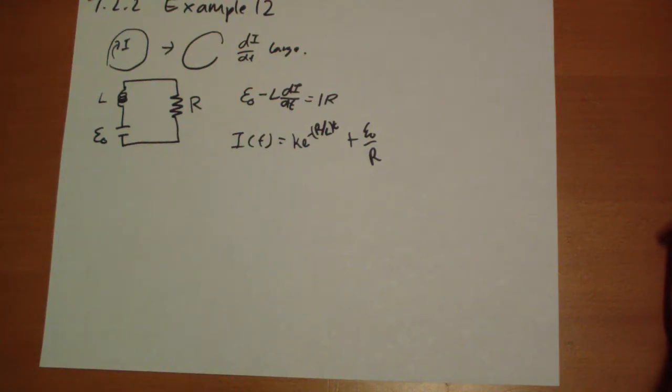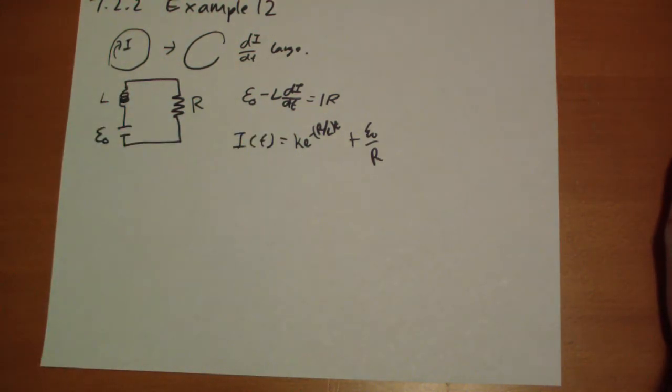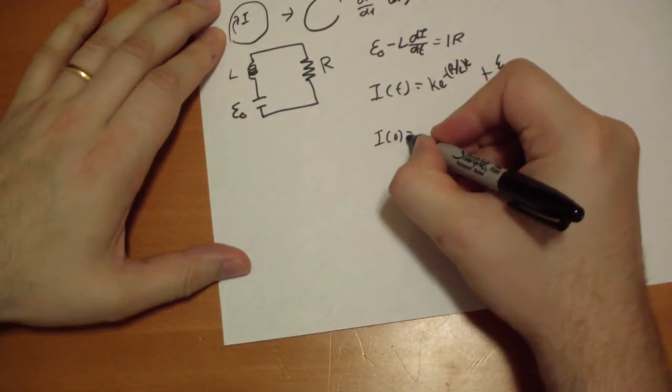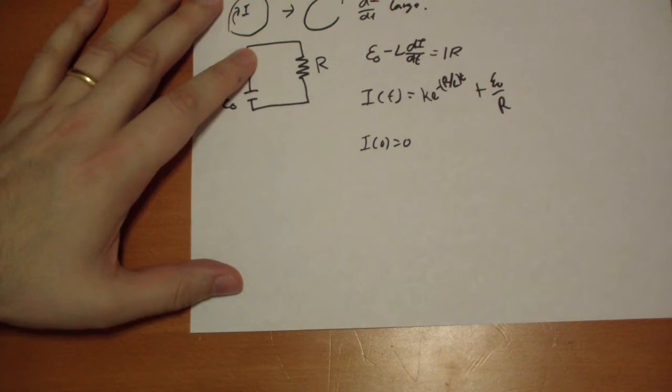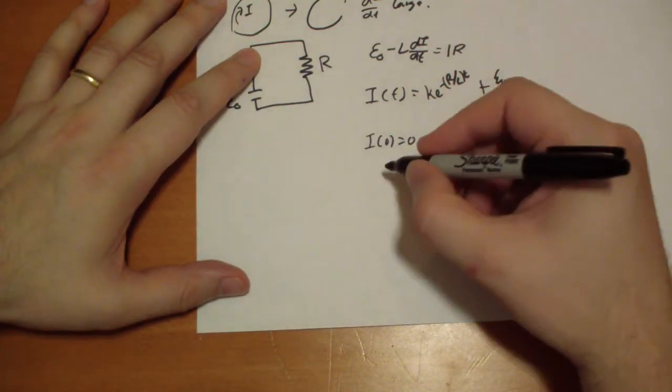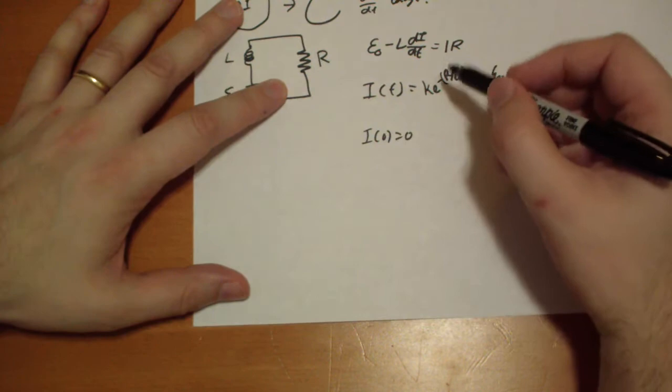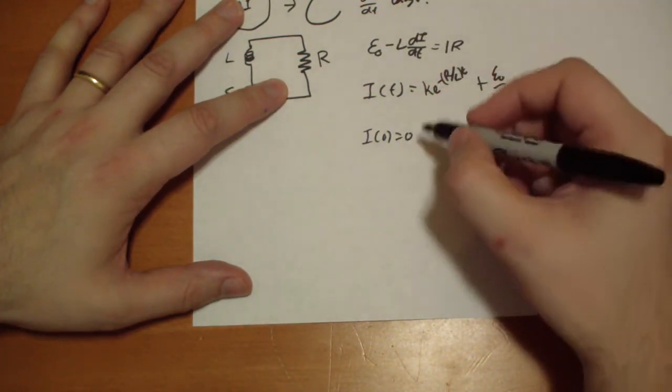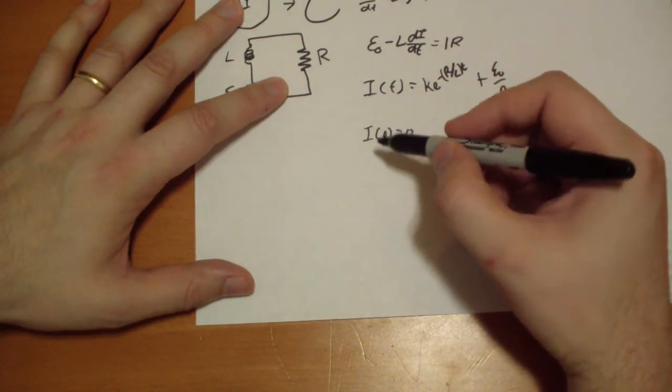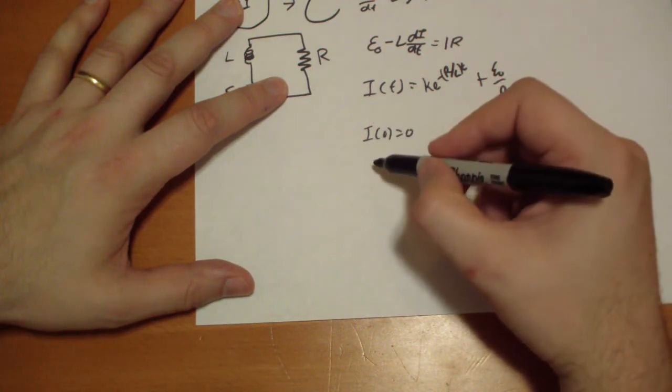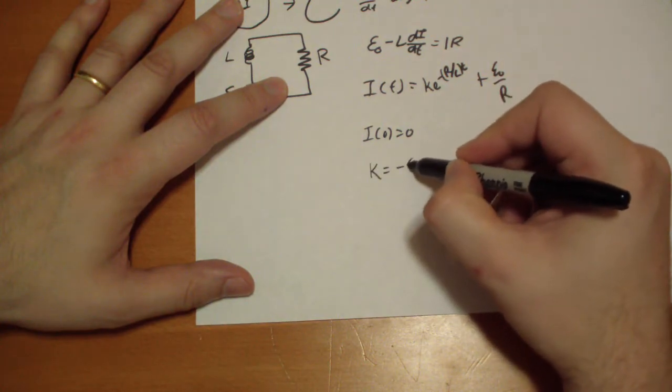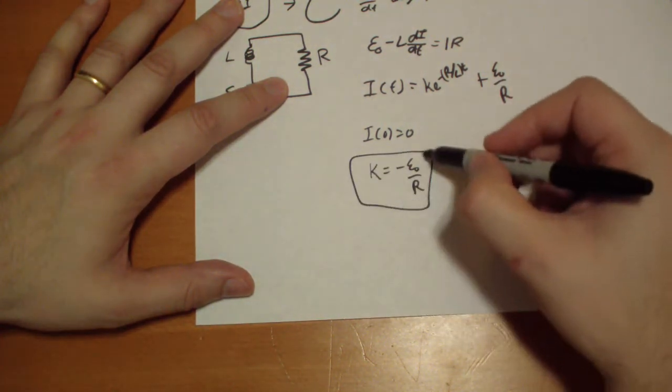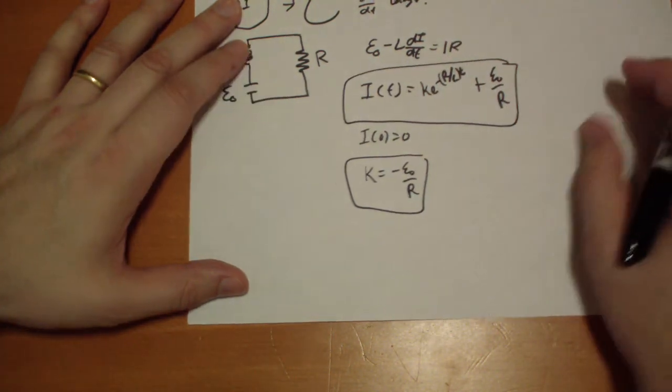So K needs to be determined by the boundary conditions of the problem. This is the one constant you need to figure out based on what the thing is. So if you have time T zero, I of zero is equal to zero. Then K, so when this is zero, K has to be such that these two oppose. And so you get a K that is equal to, where did it go? K has to equal negative epsilon-naught over R. This is the equation that solves for that loop right there.